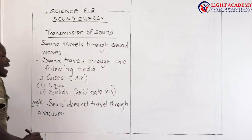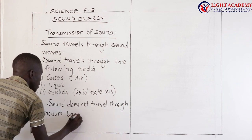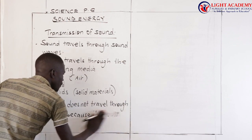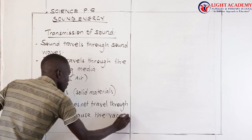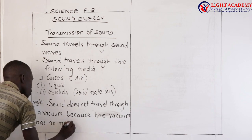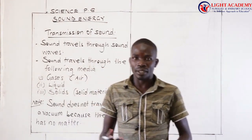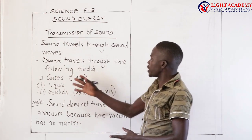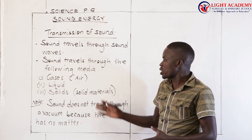The reason is a vacuum has no matter. Sound does not travel through a vacuum because it has no matter. A vacuum does not have any medium of transmission. So we know that sound travels in air — that is gases; in liquids, that is water; and in soil or solid materials.